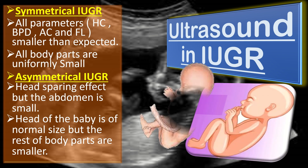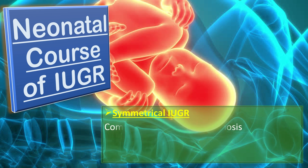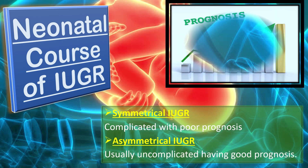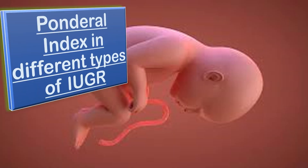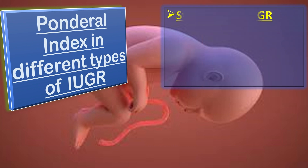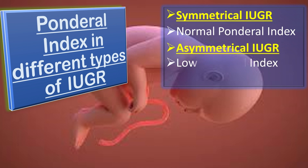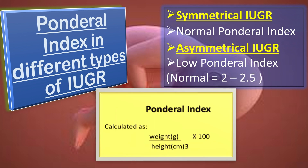Regarding the neonatal course: in symmetrical IUGR, the neonate is complicated with a poor prognosis, while in asymmetrical IUGR the neonate is usually uncomplicated with a good prognosis. The ponderal index — calculated by dividing weight in grams by height in centimeters cubed multiplied by 100 — is normal in symmetrical IUGR and low in asymmetrical IUGR. The normal ponderal index is 2 to 2.5.